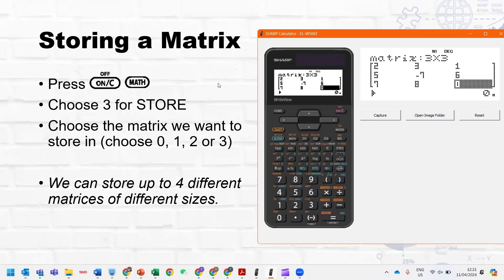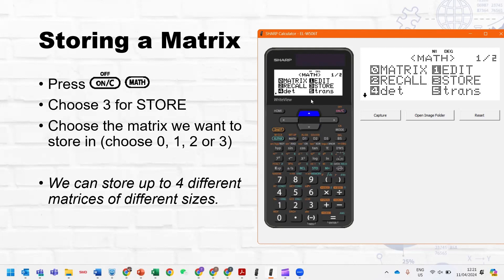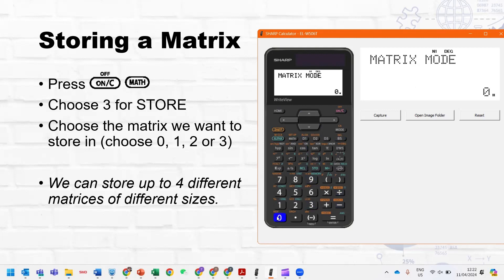Now once you've input the matrix, you need to save it. So counterintuitively, press on first, then press Math, choose three to store it, and then choose the name of the matrix. So I'm obviously just going to choose A, because I like starting at the beginning.